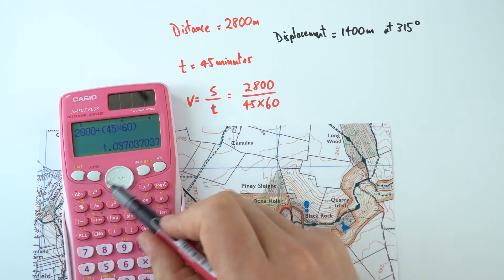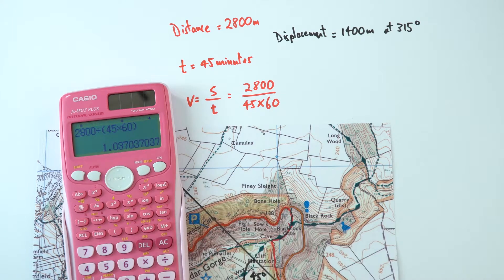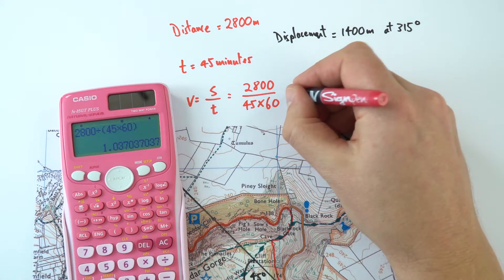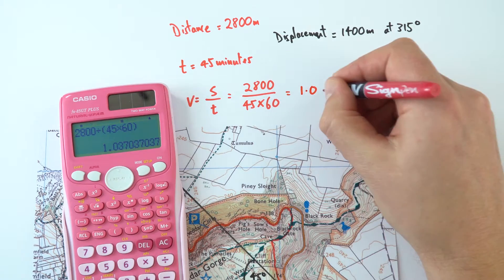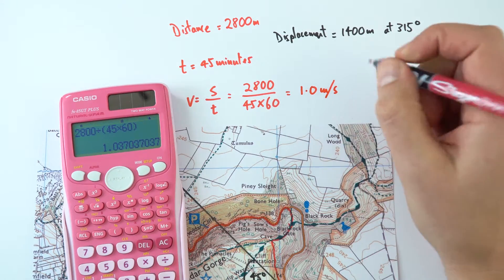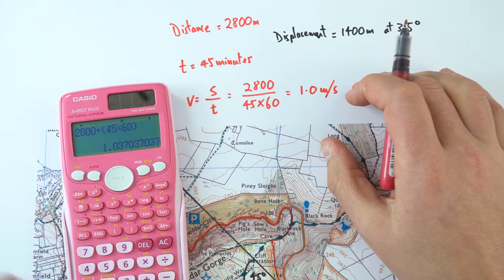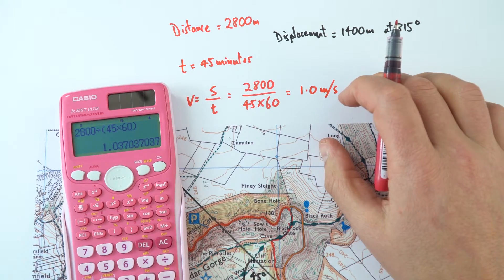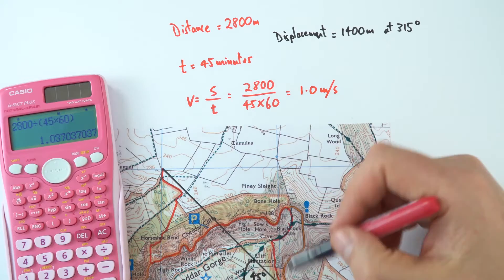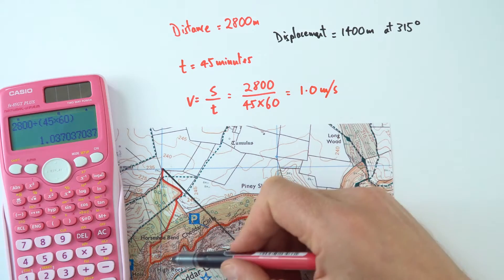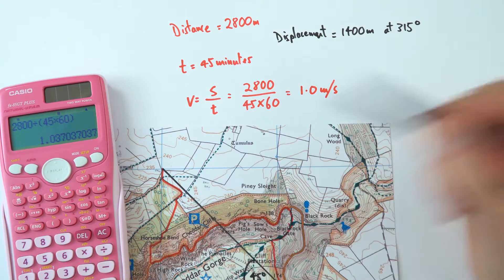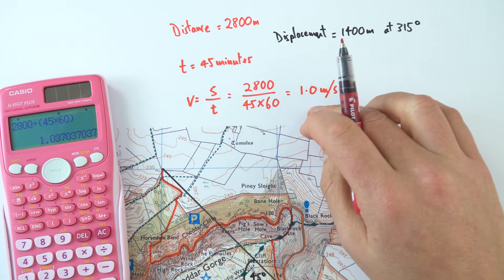And this gives me a number of 1.037. So I'm just going to say that's equal to 1.0 meters per second. A little bit slower than the normal kind of walking pace of about 1.5 meters per second. But that's because there was some quite difficult terrain to cover, and also some big hills to actually walk up as well. So a little bit slower than normal walking speed.